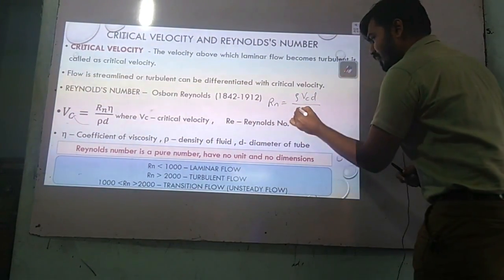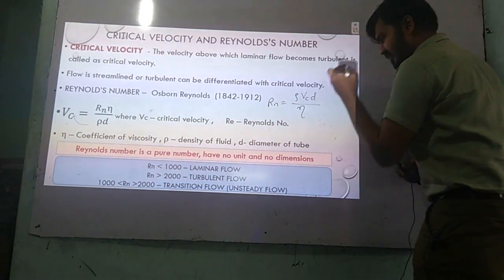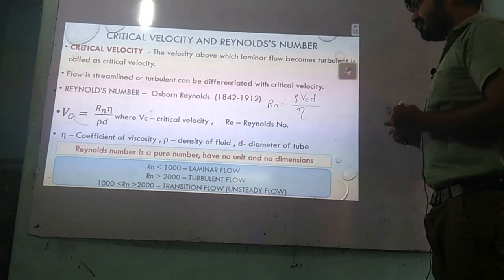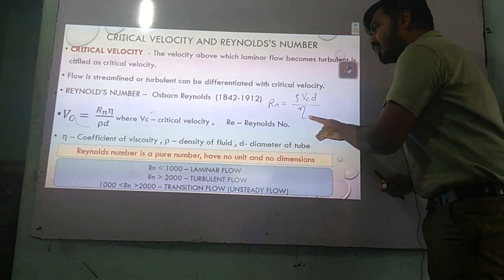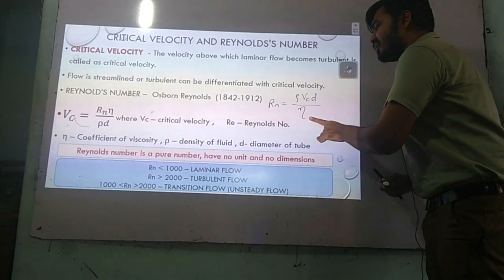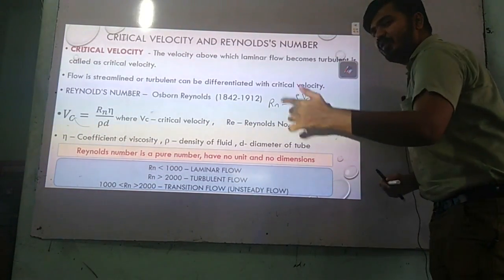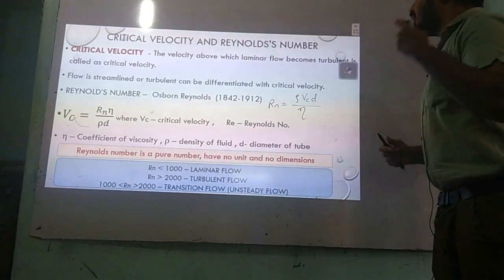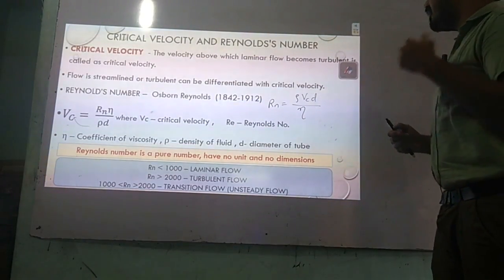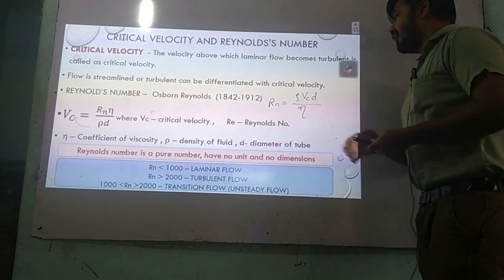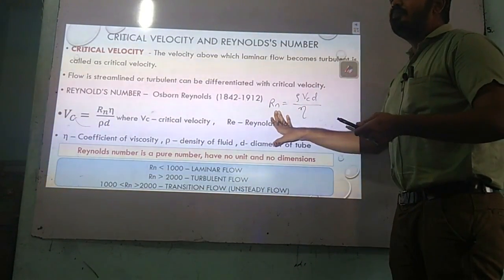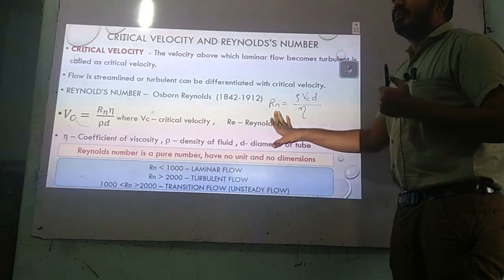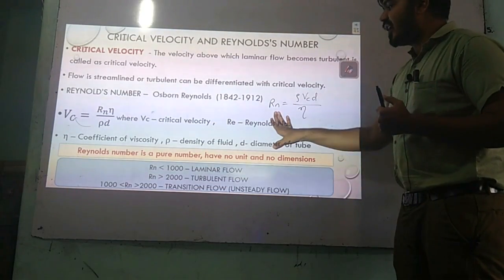Your eta is called the coefficient of viscosity — we will see it later. Reynolds number is the most important concept in fluid mechanics.